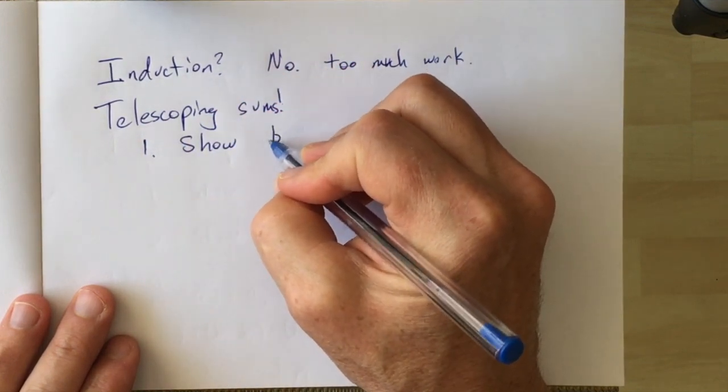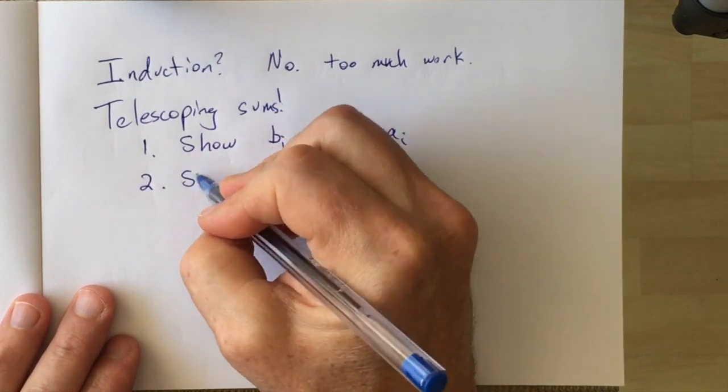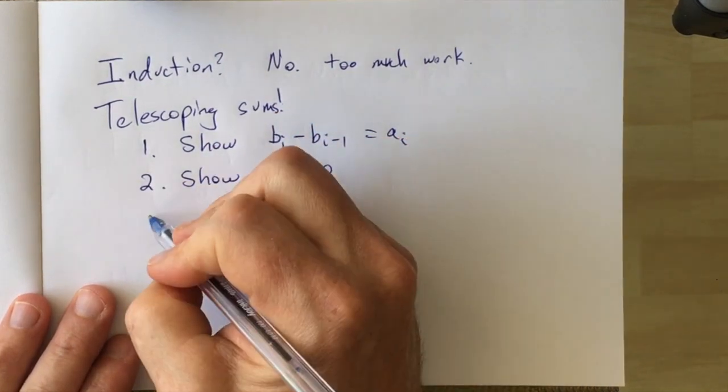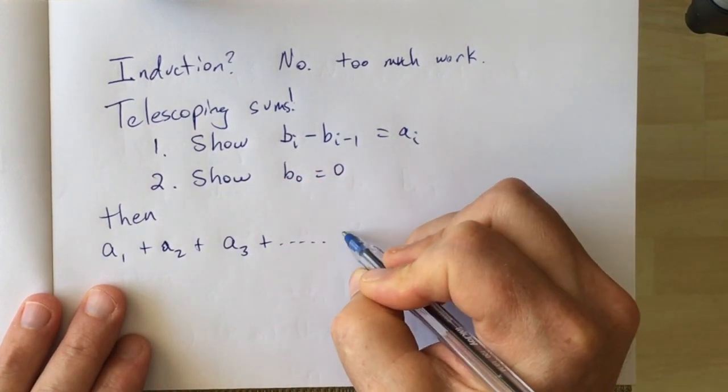And for telescoping sums you just need to show two things, that the difference between the bi and bi minus 1 term is equal to ai, and you also need to show that b0 is equal to 0.